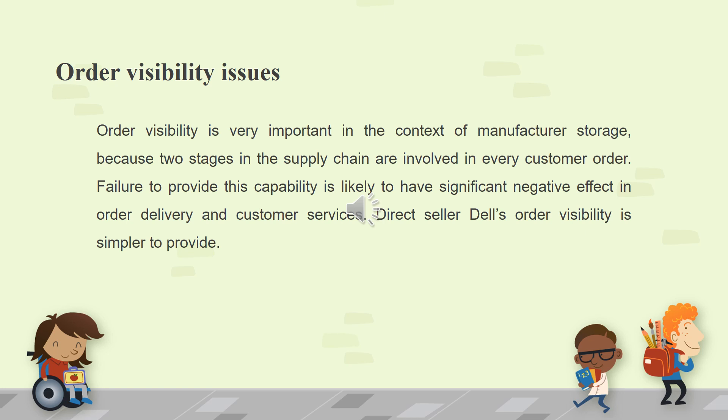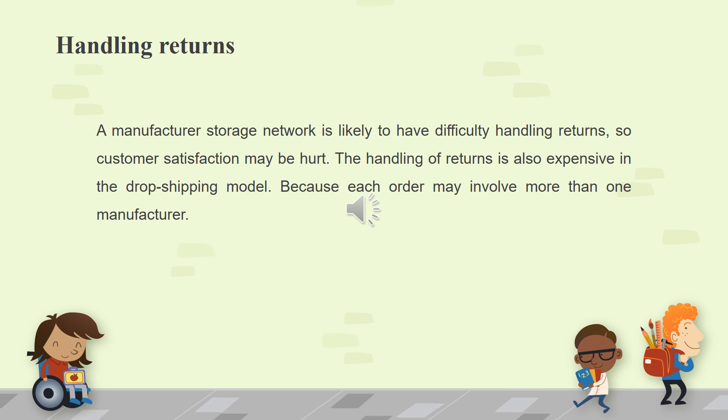Order visibility is very important in the context of manufacturer storage, because two stages in the supply chain are involved in every customer order. Failure to provide this capability is likely to have a significant negative effect on order delivery and customer service. Direct seller Dell's order visibility is simpler to provide. A manufacturer storage network is likely to have difficulty handling returns, so customer satisfaction may be hurt. The handling of returns is also expensive in the drop shipping model, because each order may involve more than one manufacturer.